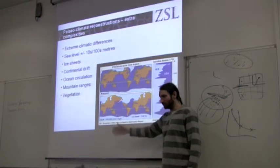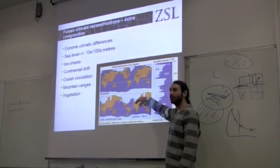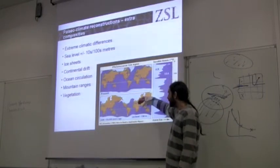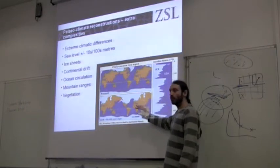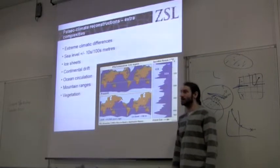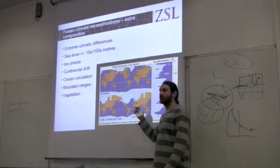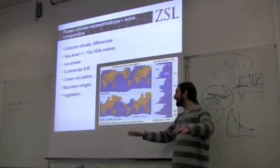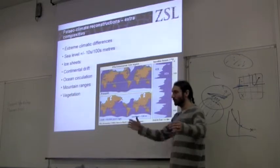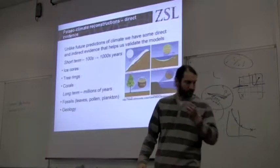One thing I remember from speaking with paleoclimatologists is the controversy over the height of the Himalayas and its impact on monsoons in Southeast Asia — the height of the Himalayas has a massive influence on precipitation patterns. Finally, there are massive vegetation differences, and large areas of vegetation can themselves create different climatic conditions. The Amazon rainforest basically creates its own weather, and its presence influences not just local but regional weather patterns.